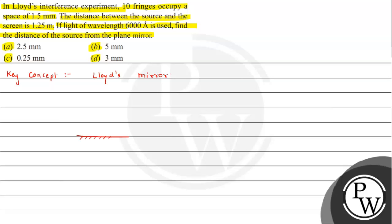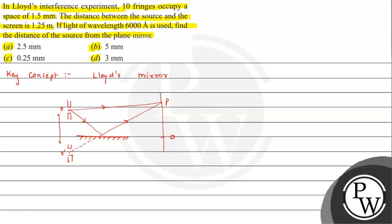Let's suppose we have a mirror. Here we have a screen. This is our point O, and here we have a source. So here we have a light ray — one wave going directly, and the second wave we can consider as coming from the mirror after reflection. This is our point B. One wave is reflected and it appears to be coming from the other side. So if we think that this is edge height h, the separation between the two sides will be twice of h, because this is an image.